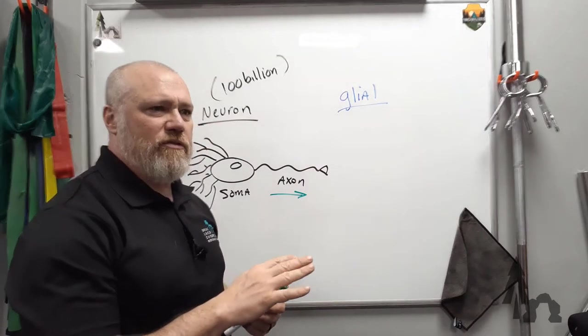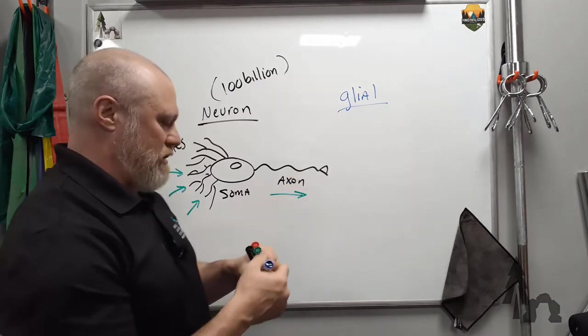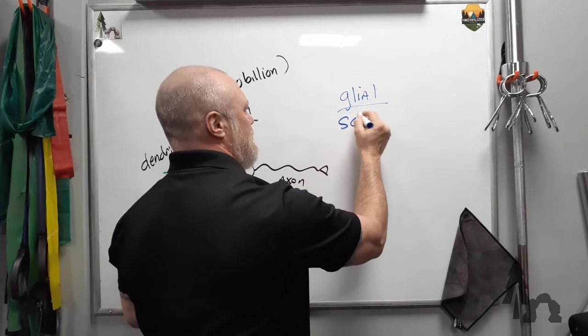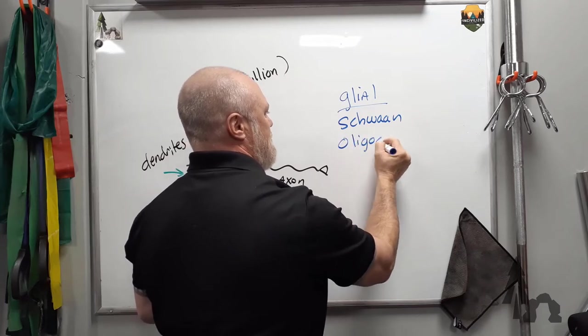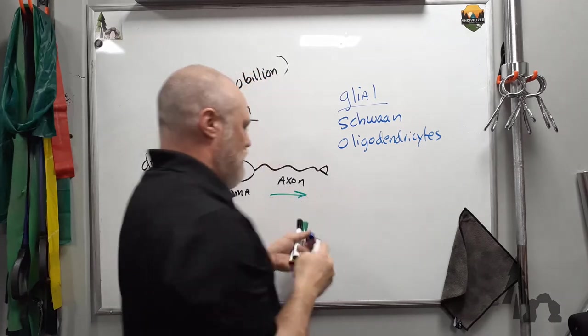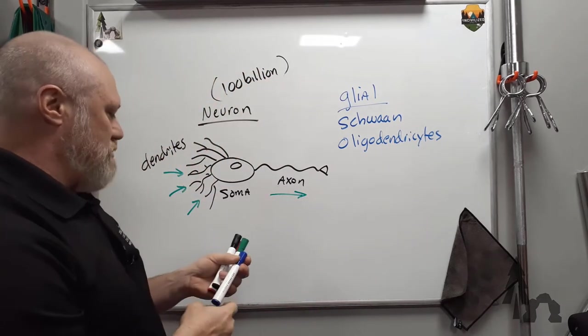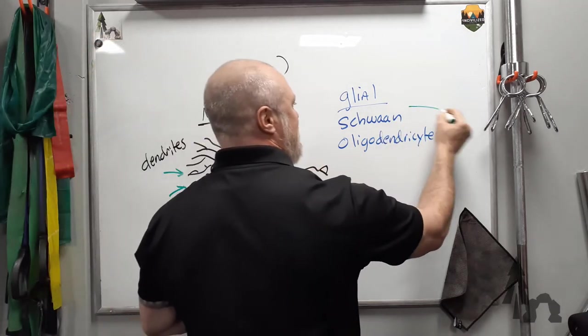For now, you need to worry about satellite cells and astrocytes. We're going to talk about Schwann cells and oligodendrocytes. Schwann cells and oligodendrocytes produce a lipoprotein called myelin.